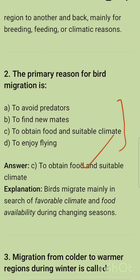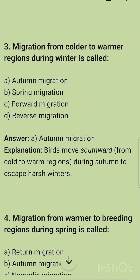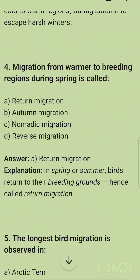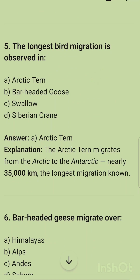The third MCQ: migration from colder to warmer regions during winter is called autumn migration. In autumn migration, birds move southward from cold to warm regions to escape harsh winters. Migration from warmer to breeding regions during spring is called return migration — in spring or summer, birds return to their breeding grounds.